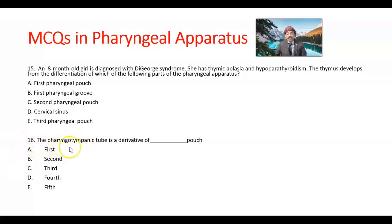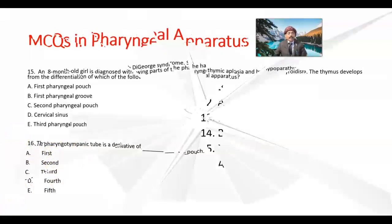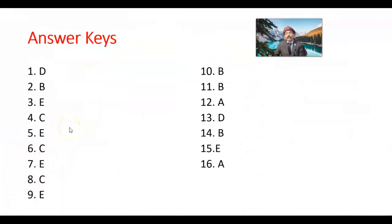Question number 16. The pharyngotympanic tube, also called auditory tube or Eustachian tube, is a derivative of which pouch — first, second, third, fourth, or fifth? The answer is the first pharyngeal (branchial) pouch, option A. That concludes all the multiple choice questions in pharyngeal apparatus or branchial pouches.